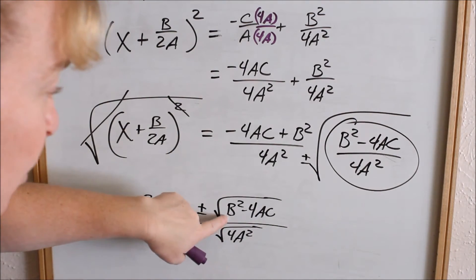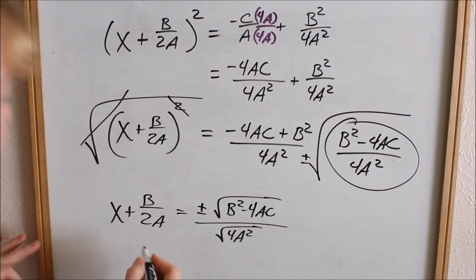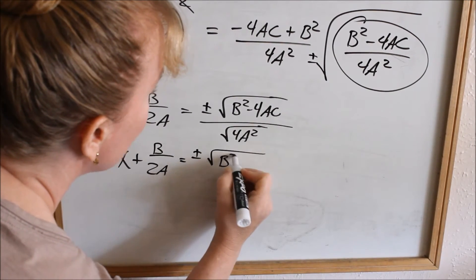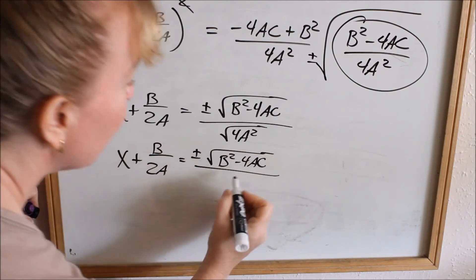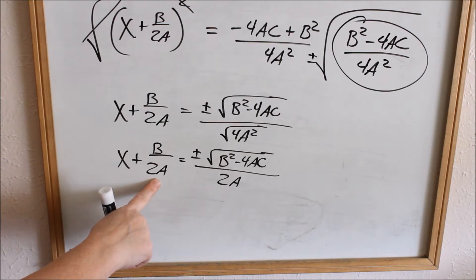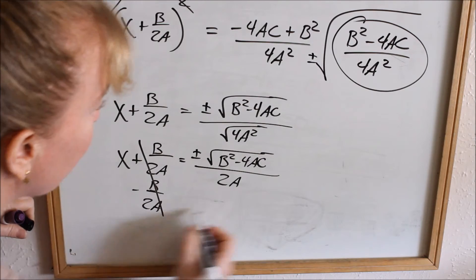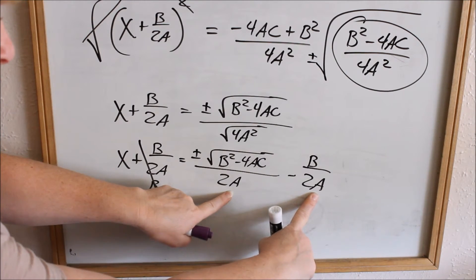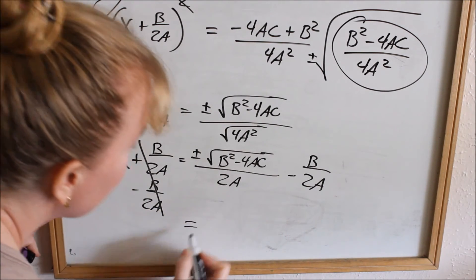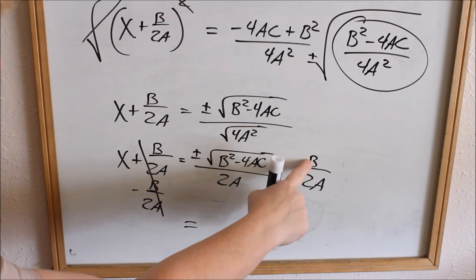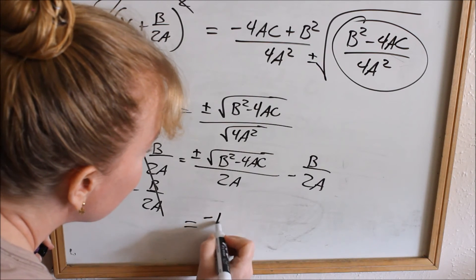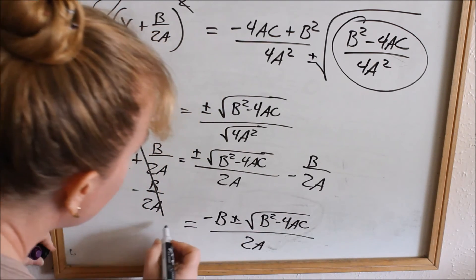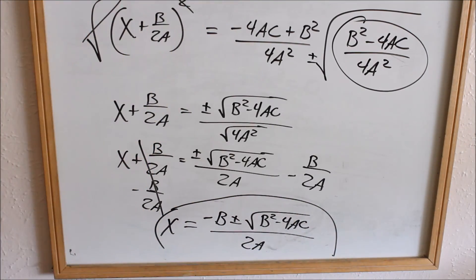Can I simplify the square root of the numerator anymore? No. But can I simplify the square root of the denominator? Yes. So I have x plus b over 2a equals plus or minus the square root of b squared minus 4ac, and the square root of 4a squared is 2a. Now I need to subtract b over 2a from both sides, which makes that go away. I already have a common denominator, so I rewrite it all over one denominator — writing negative b first: x equals negative b plus or minus the square root of b squared minus 4ac, all over 2a. And that is how you get the quadratic formula from completing the square.